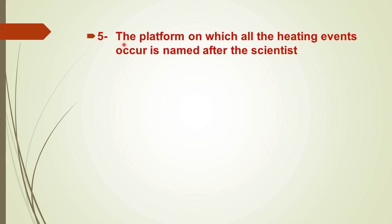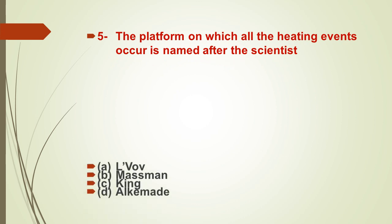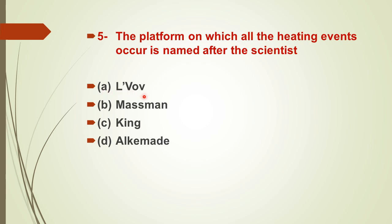Question number five: the platform on which all the heating events occur is named after which scientist? Options: A) L'vov, B) Massman, C) King, D) L'vov. The right answer is option A — L'vov. The platform is called the L'vov platform, which is used in the graphite furnace.